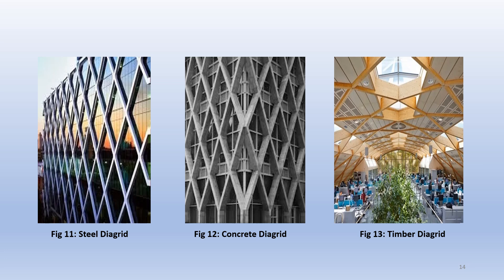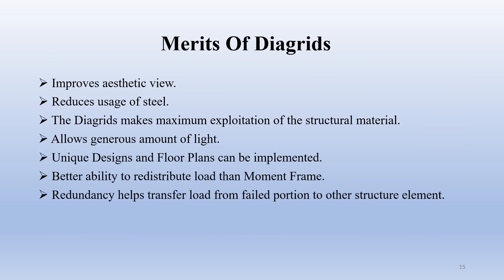Here are figures showing different diagrid structures: Figure 11 — steel diagrid, Figure 12 — concrete diagrid, Figure 13 — timber diagrid. The merits of the diagrid system are as follows: it improves aesthetic view; it reduces the use of steel, thus helping in sustainable development; it makes maximum exploitation of structural material; it allows a generous amount of natural light; unique designs and floor plans can be implemented; it has better ability to redistribute load than a moment frame; and redundancy helps transfer load from a failed portion to other structural elements.